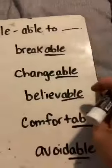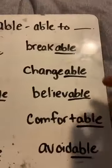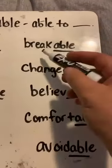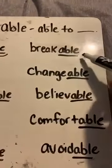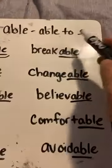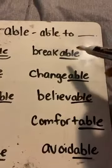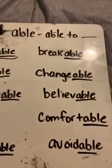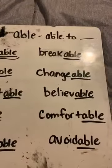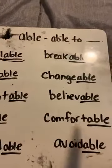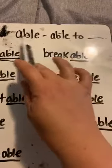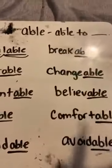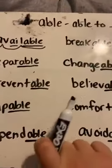This one might be easier to understand. Let's try this one — BREAKABLE. Able to what? Yes, BREAK. Very good. So remember, A-B-L-E says ABLE.